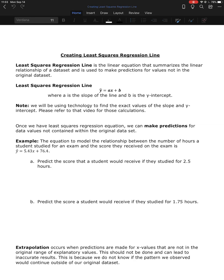Alright, so we've created our scatter plot, calculated our correlation coefficient, we have a strong or maybe moderate linear relationship. So now what we're going to do is create the least squares regression line, which is a linear equation that summarizes the relationship in our data set, and we're going to use that to make predictions for numbers that are not in the data set.